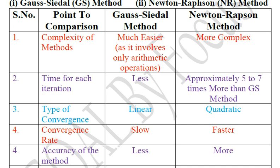If we talk about accuracy of method, GS method is less accurate. But in case of Newton-Raphson method, this is more accurate.